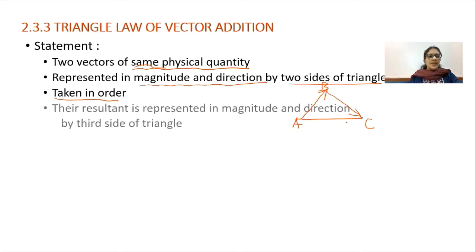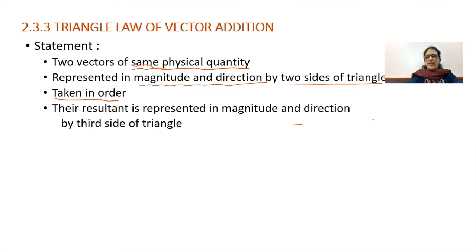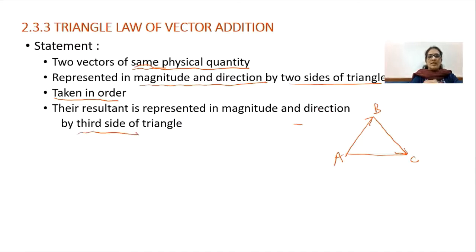Their resultant is represented in magnitude and direction by the third side. As shown — if this is triangle A, B, C and AB is the first vector and BC is the second vector taken in order — then the resultant is represented by the third side. The third side is also a vector, and it can be either AC or CA.